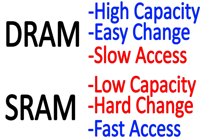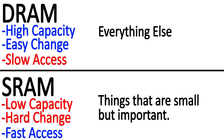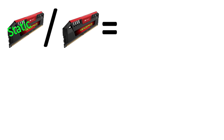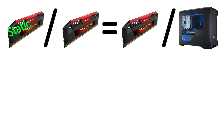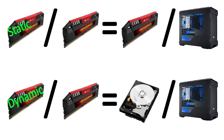Static RAM is used to store data or instructions that aren't particularly large but need to be accessed frequently and quickly — such as a cache. Meanwhile, dynamic RAM is used for everything else: things that aren't needed quite as urgently or frequently, but take up more space. In a way, static RAM does for your RAM what RAM does for your computer as a whole — low storage, but fast and reliable access. Meanwhile, dynamic RAM does for your RAM what a hard drive does for your computer — not as quickly accessible, but far more storage.